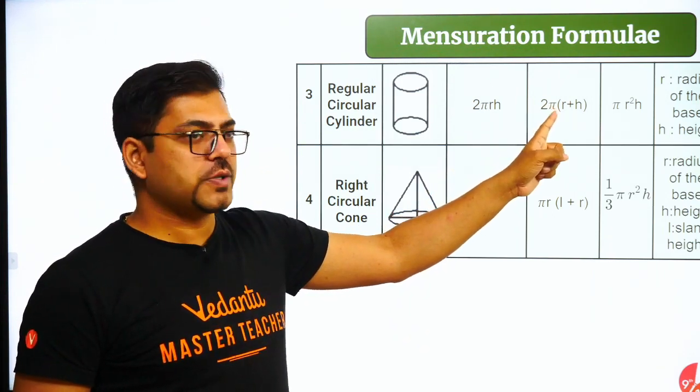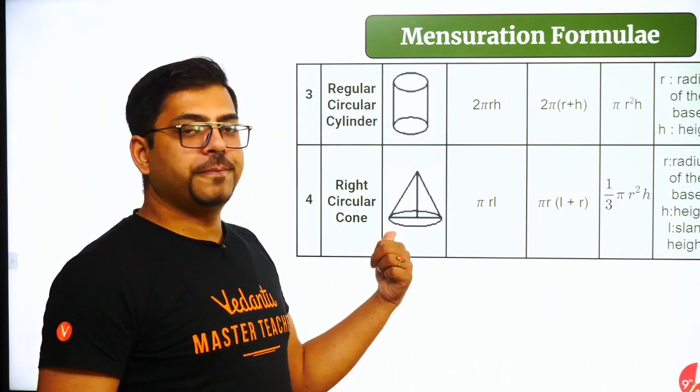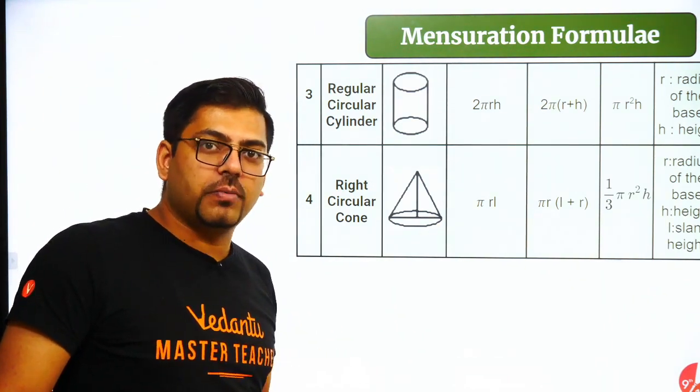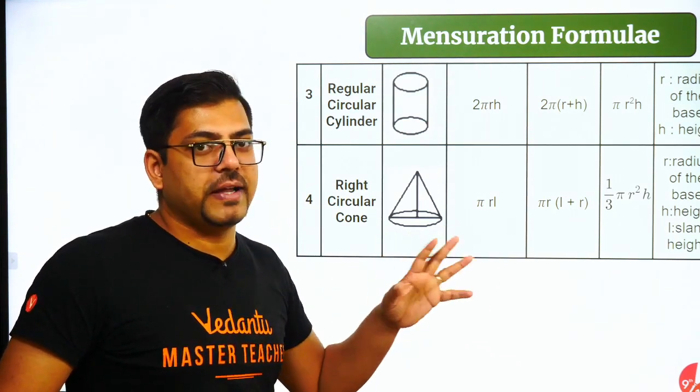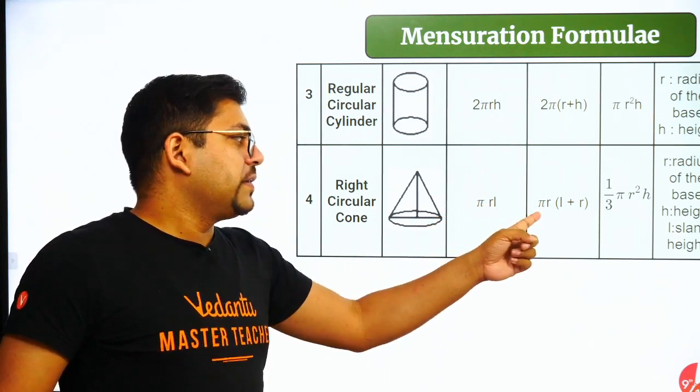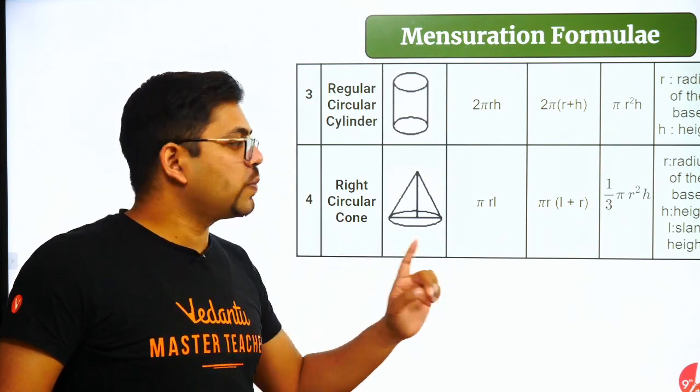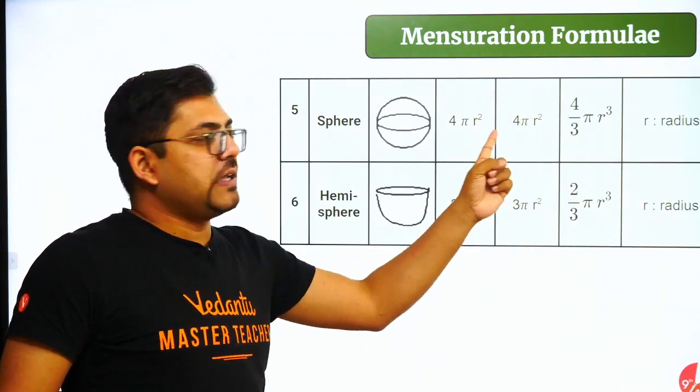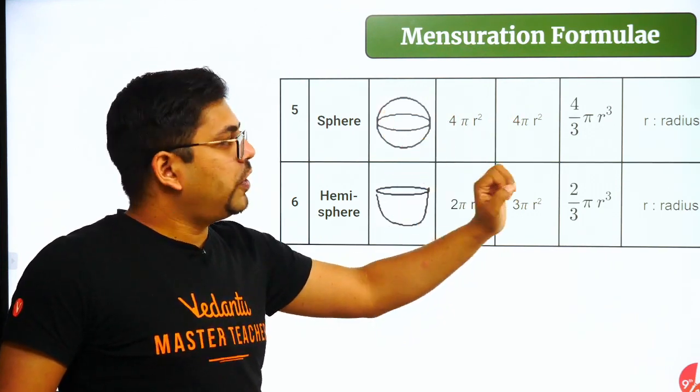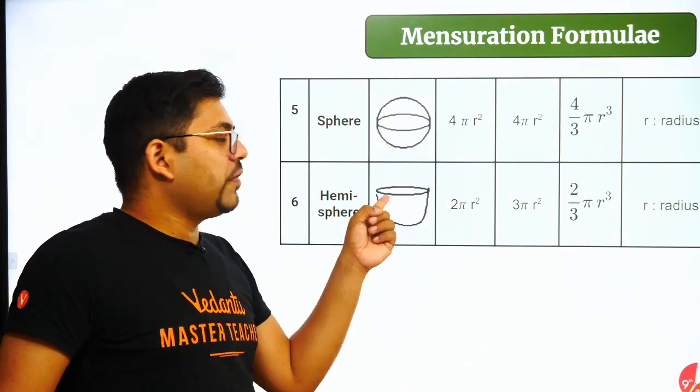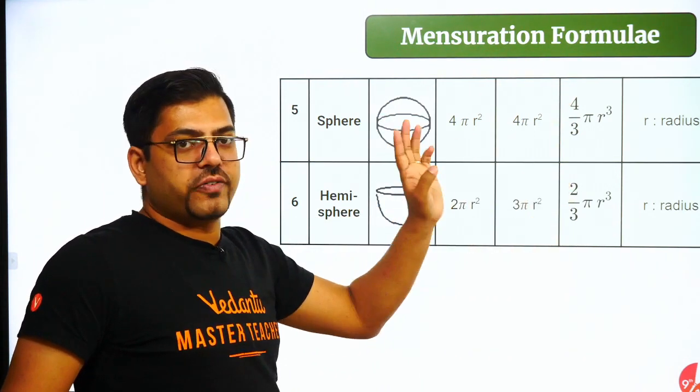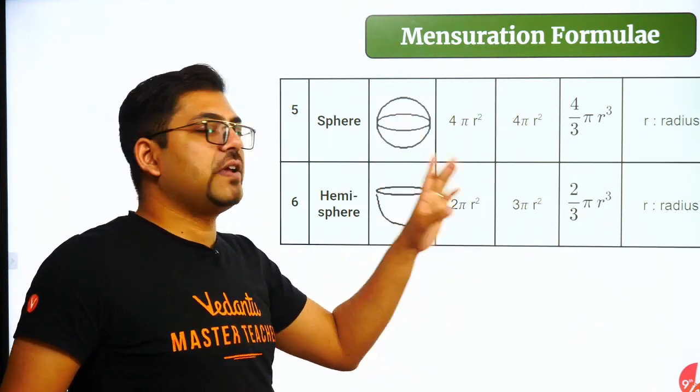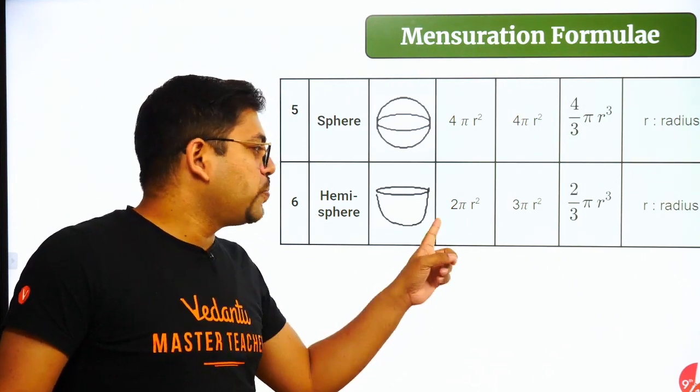Moving on, for cylinder: CSA is 2πrh, TSA is 2πrh + 2πr², volume is πr²h. For cone: CSA is πrl, TSA is πrl + πr², volume is 1/3 πr²h. For sphere, curved surface area and total surface area are the same: 4πr², volume is 4/3 πr³. For hemisphere: CSA is 2πr², but TSA is 3πr² - remember this, it's not half. Volume is 2/3 πr³.